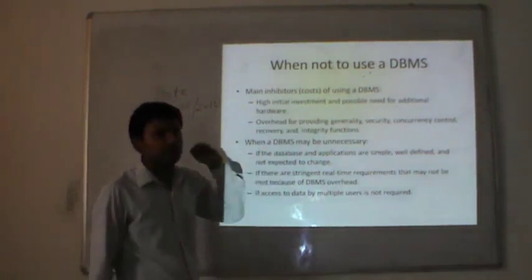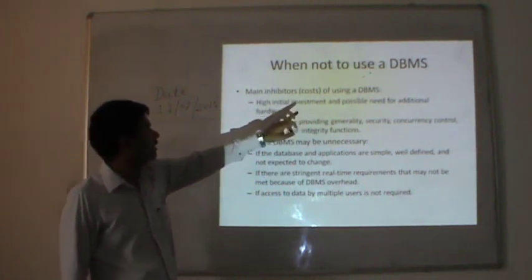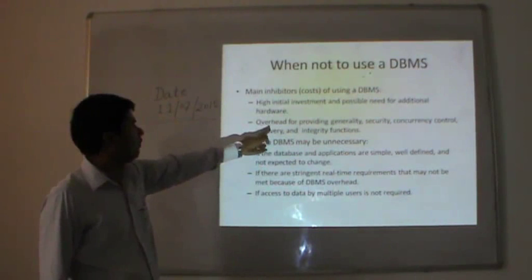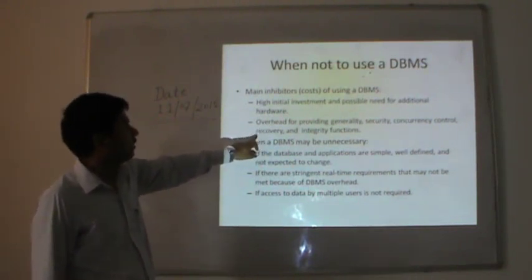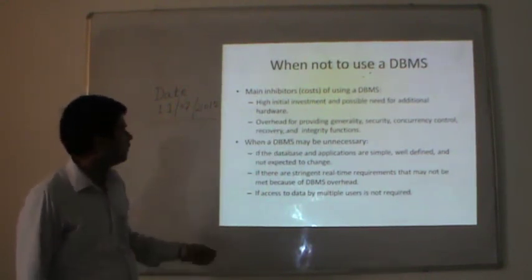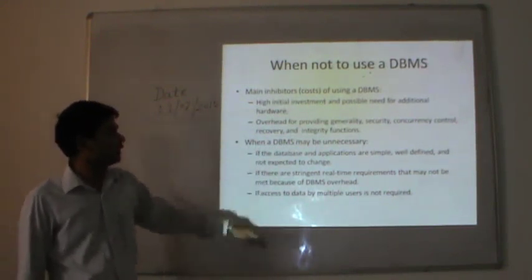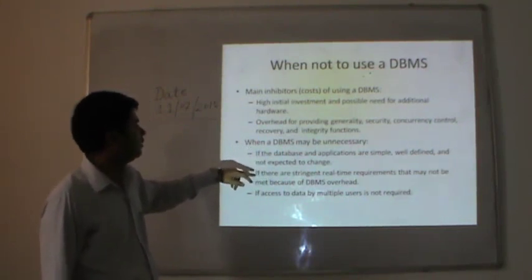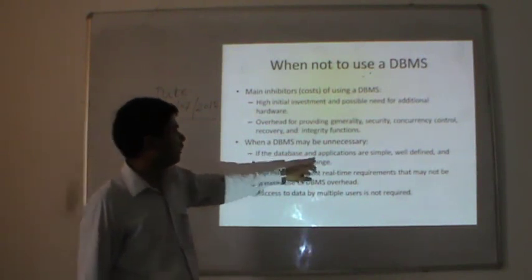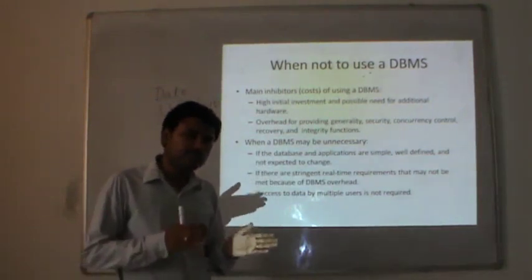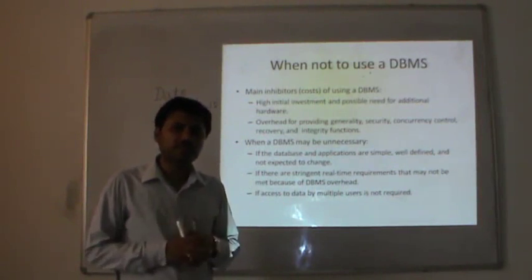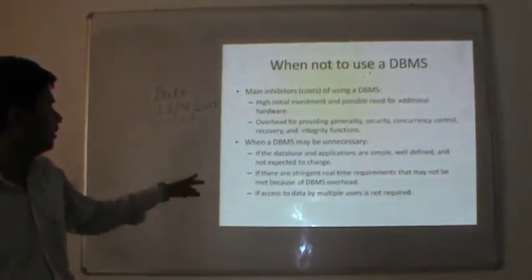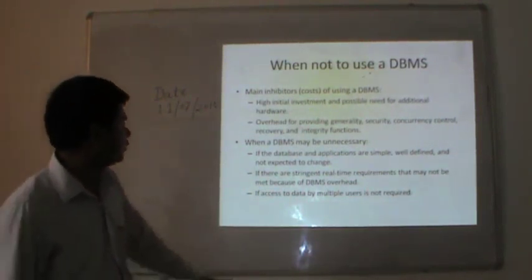When not to use a database management system: the main inhibitors are the cost of using a database — high initial investment and possible need for additional hardware, and overhead for providing security, concurrency control, recovery, and integrity functions. A database may be unnecessary if the database and applications are simple, well-defined, and not expected to change — in that case it is not advised to use a database. If there are stringent real-time requirements that may not be met because of DBMS overhead, or if multiple user access to the database is not needed, a DBMS may not be required.